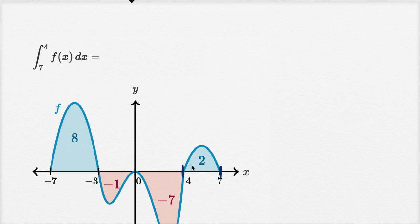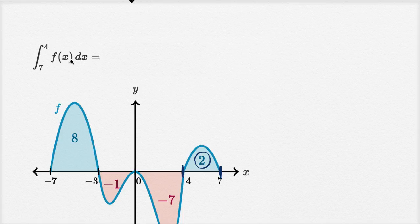Now you might be tempted to say, okay, well look, the area between f of x and x is two, so maybe this thing is two.